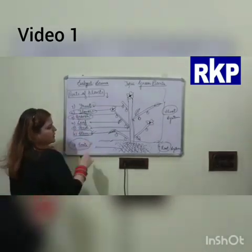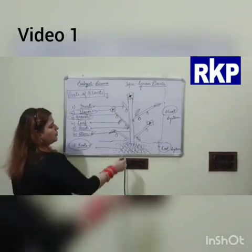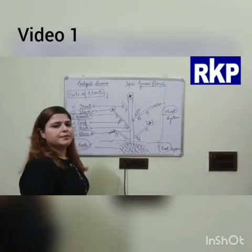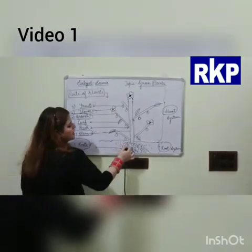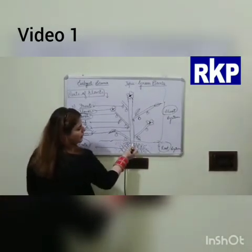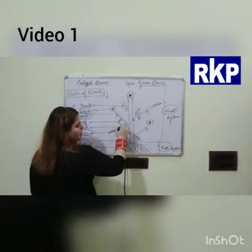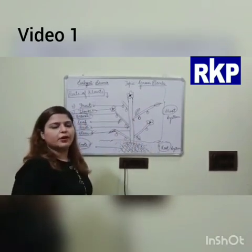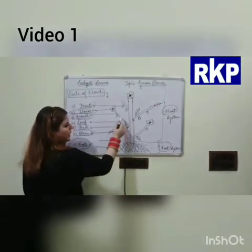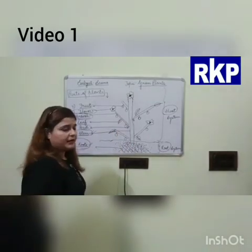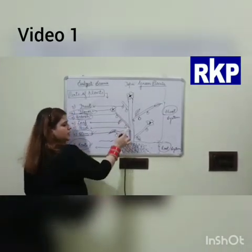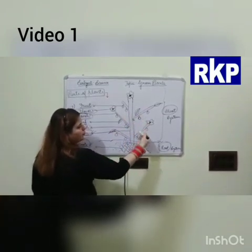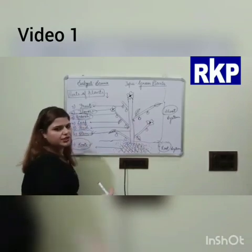Next is the stem. As I have already told you, the stem keeps the plant upright. The stem also takes water and minerals from the roots and gives it to all the parts of the plant. The stem is that structure of the plant which bears other parts such as flowers, fruits, buds, leaves, and branches.